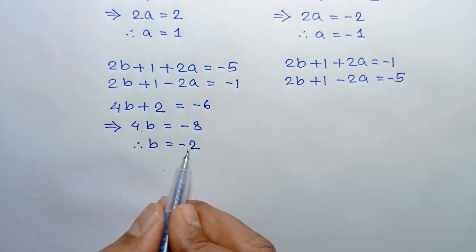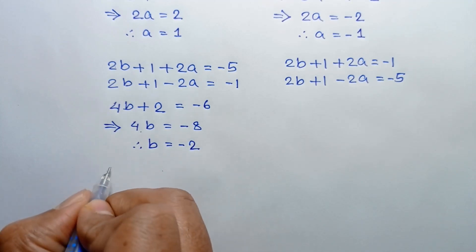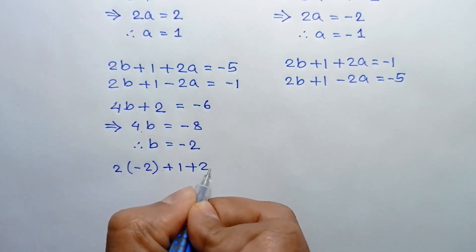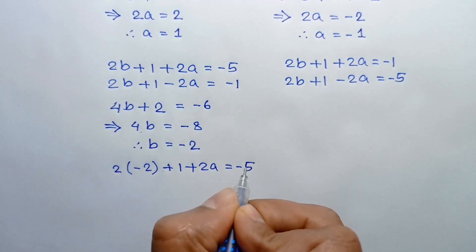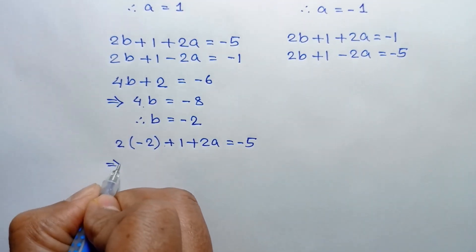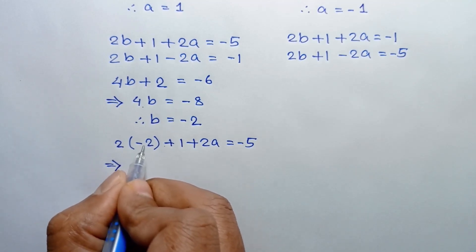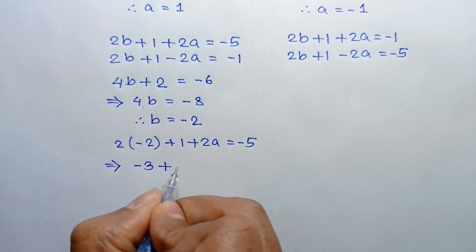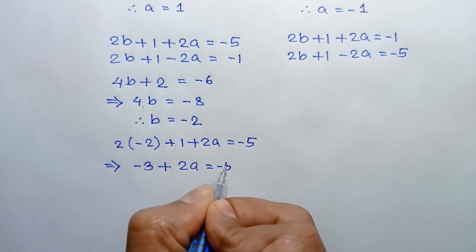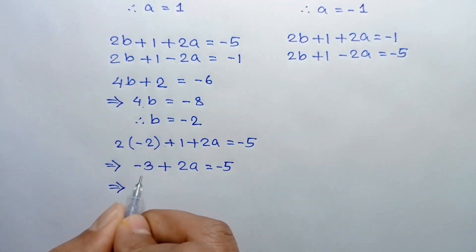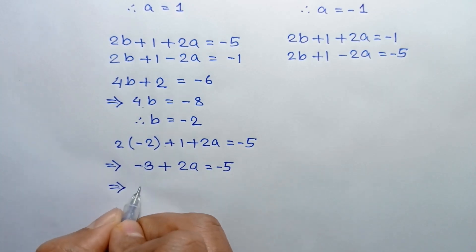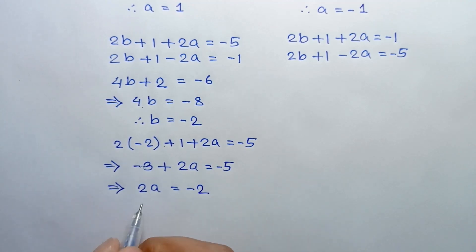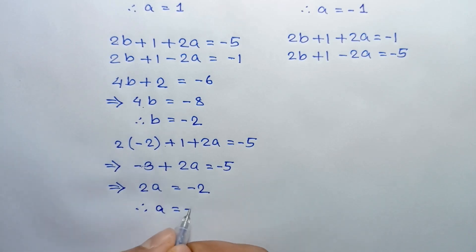Substituting b = −2 into the equation: 2(−2) + 1 + 2a = −5, so −3 + 2a = −5. Taking −3 to the right side, 2a = −2. Dividing both sides by 2, a = −1.